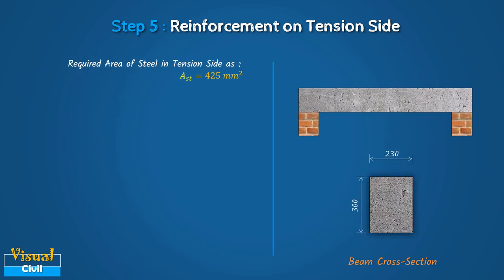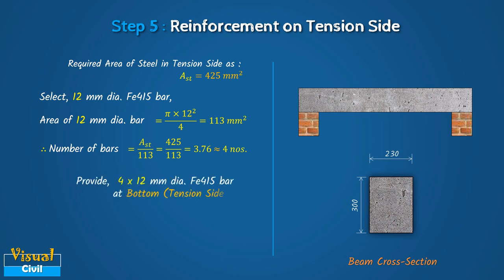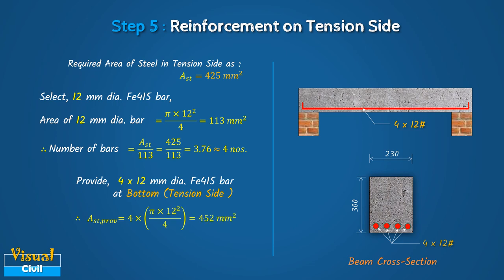Let us fix the number of bars to be provided as tension reinforcement. Select the bar diameter as 12 mm; the cross-sectional area of this bar is 113 mm². Compute the number of bars by dividing the required area of steel by the cross-sectional area of each bar. Provide 4 numbers of 12 mm diameter bars at the bottom (tension side), giving a total area of steel provided equal to 452 mm². Also provide 2 numbers of 10 mm diameter bars at the top as anchor bars.